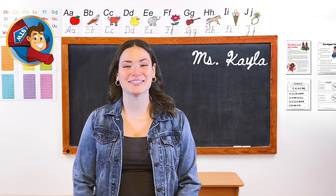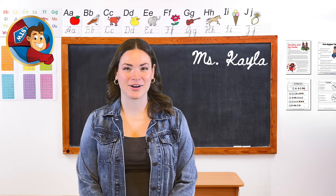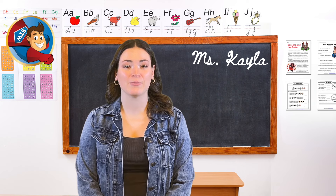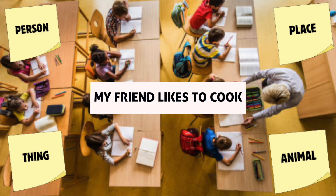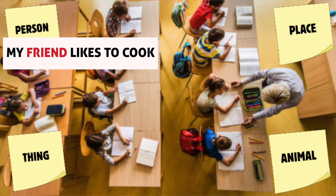Now let's read the sentence on the task card and decide which type of noun it represents. 'My friend likes to cook.' Where should we go? That's right, the person corner.